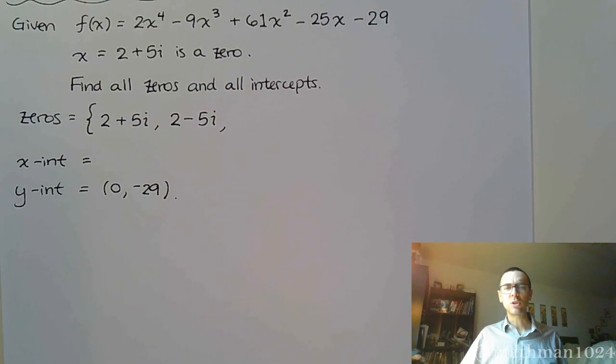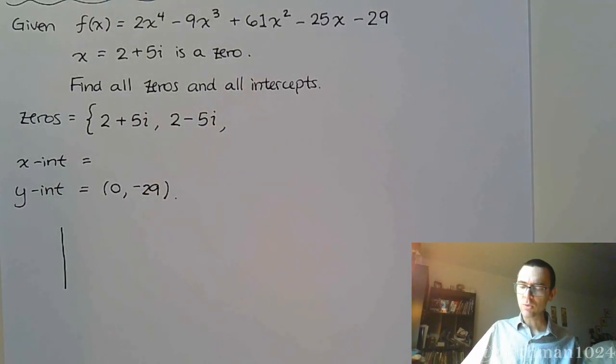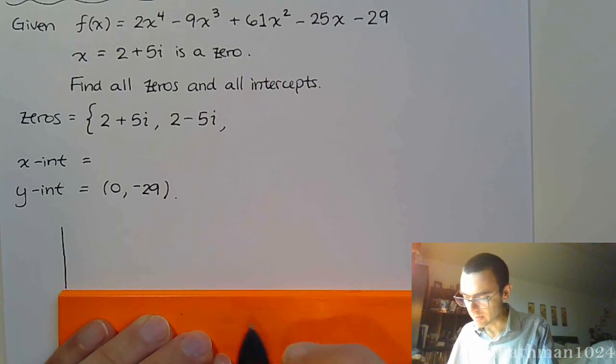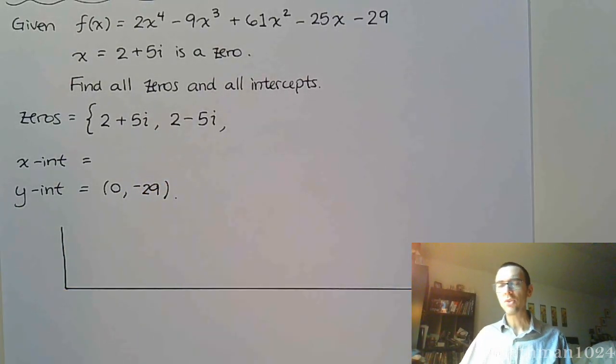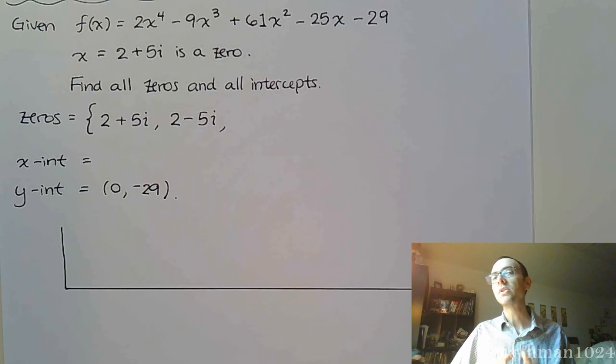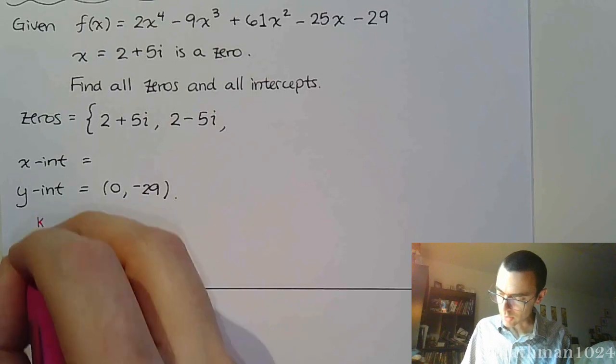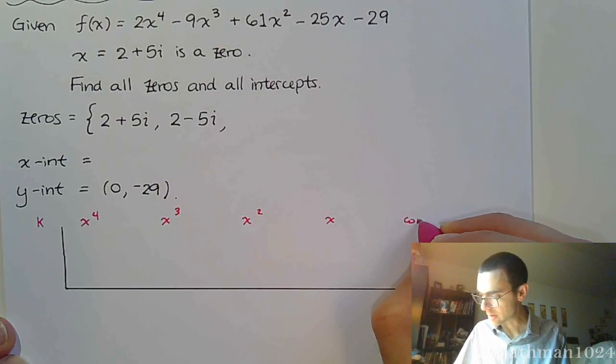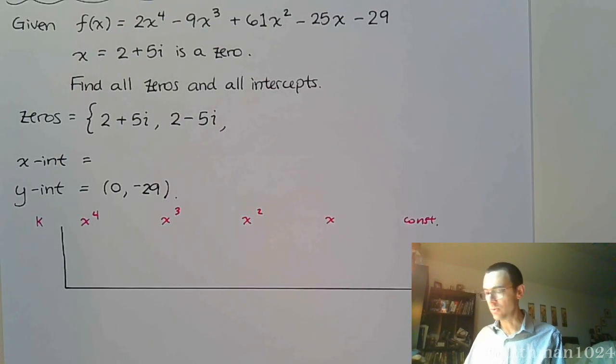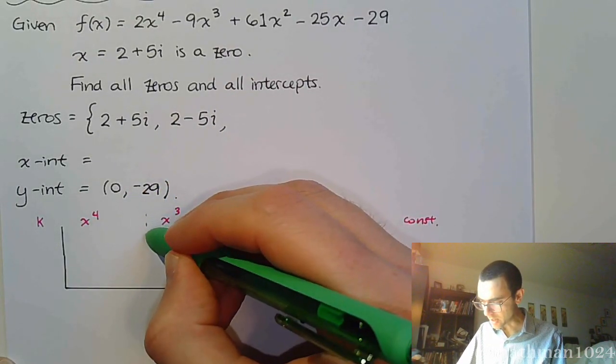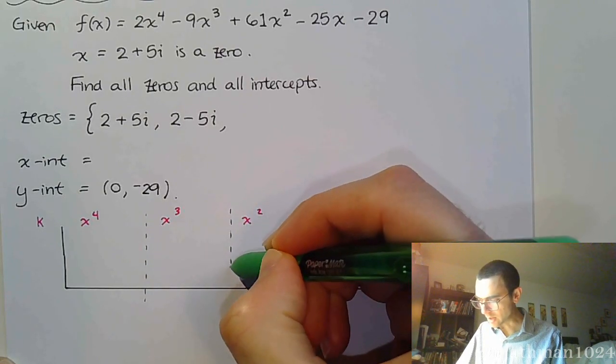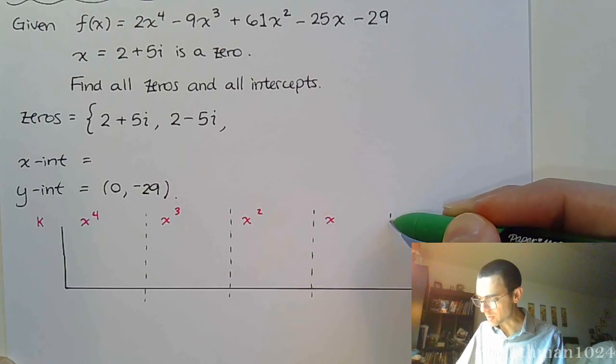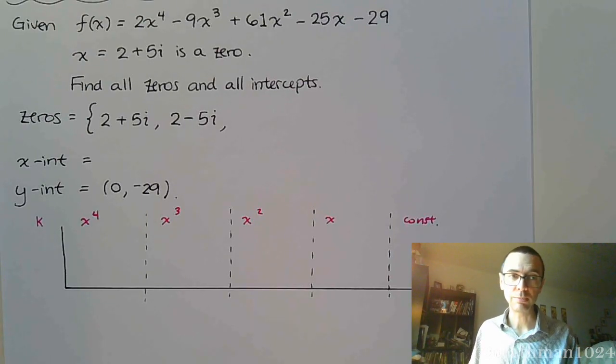Alright, so this next part is going to be the roughest part of the whole problem. We're going to do synthetic division. And when we do synthetic division, we need to make sure that this is spaced out correctly. And the reason I need it to be spaced out correctly is because we're going to be dealing with complex numbers in the middle of the synthetic division, so they're going to be double wide because you have the real and the imaginary part. So, make sure that you have the appropriate space for that.